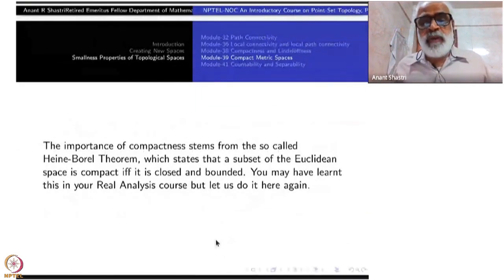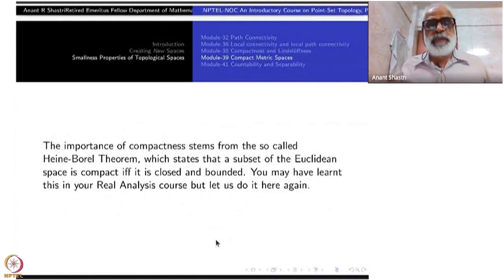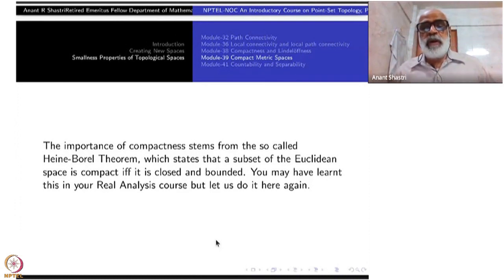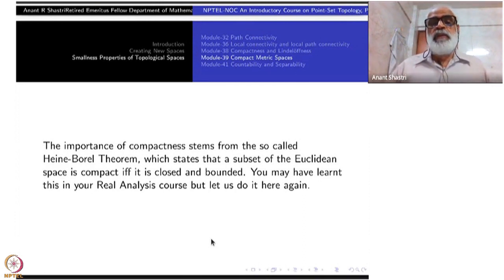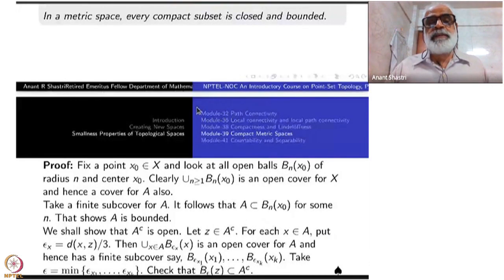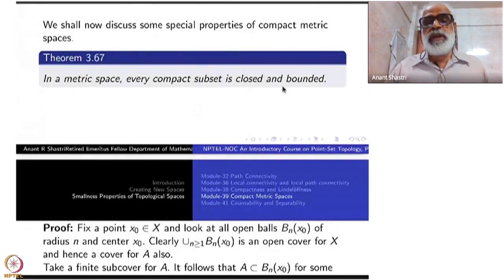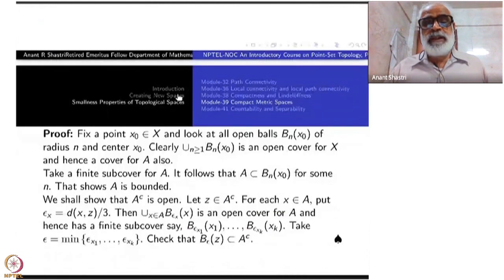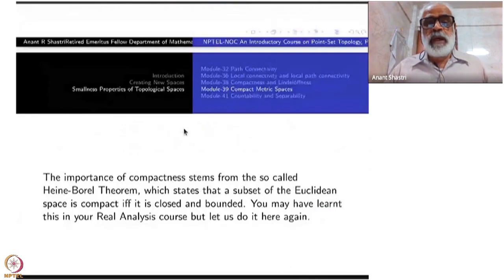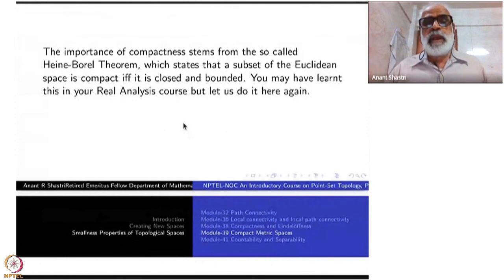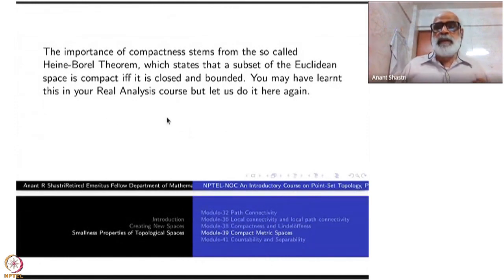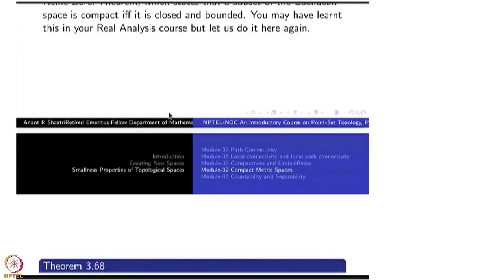The importance of compactness stems from the so-called Heine-Borel theorem, which states that a subset of Euclidean space is compact if and only if it is closed and bounded. We have proved that every compact subset inside a metric space is closed and bounded. The converse holds for Euclidean spaces. That is the classical result which goes under the name Heine-Borel theorem. You might have learned it in an analysis course, but let us do it here.